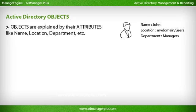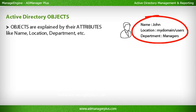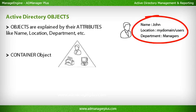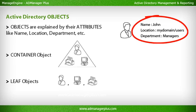Objects are explained by their attributes like name, location, department, etc. Container objects can contain other objects like users, computers, OUs, etc. Leaf objects cannot contain other objects — for example, users, computers, etc.